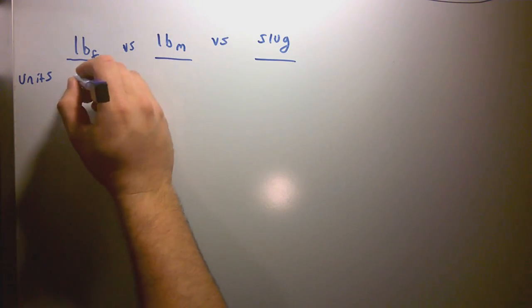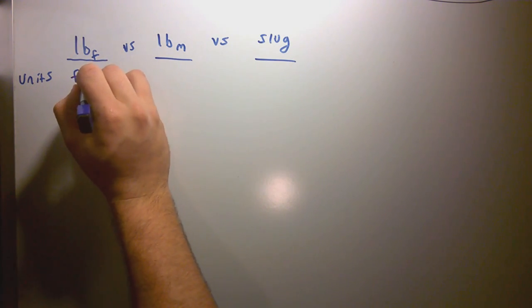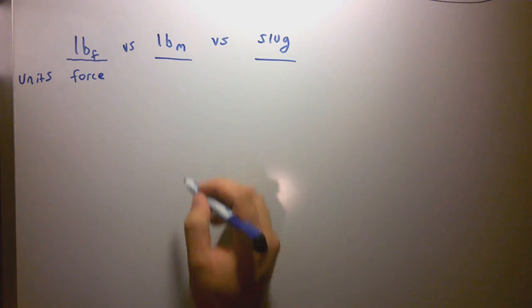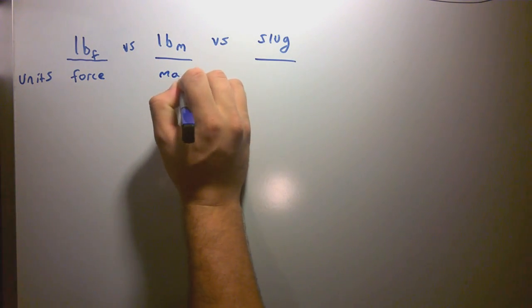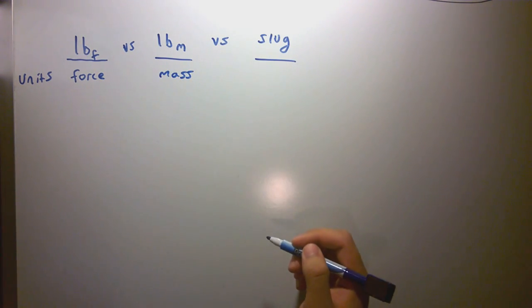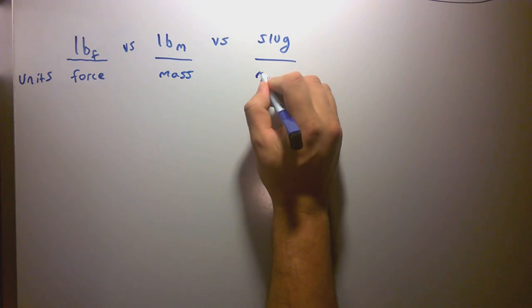So first thing, pound force, as you probably guessed, is a unit of force. Whereas a pound mass, as you probably guessed, is a unit of mass. A slug is also a unit of mass.